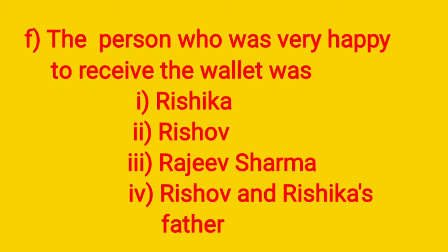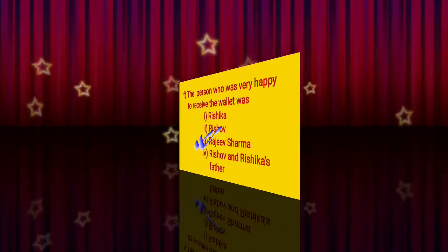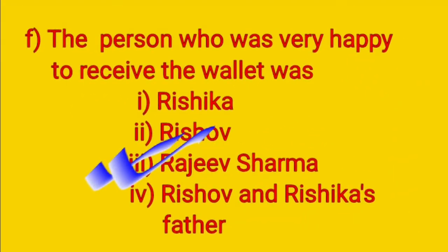Number F: the person who was very happy to receive the wallet was — option one: Rishika, option two: Rishabh, option three: Rajiv Sharma, option four: Rishabh and Rishika's father. The correct option is option three: Rajiv Sharma.